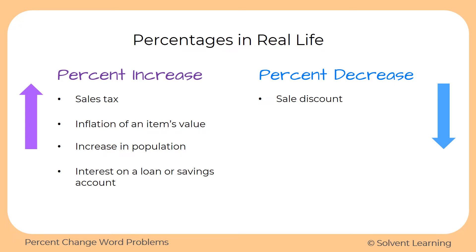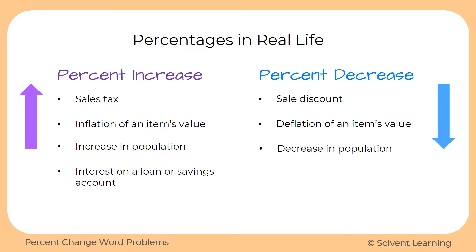We might see percent decrease if something we're buying is on sale and we're given a discount, which causes the price to go down. And just like items can inflate over time, we can also see deflation — for example, the more you drive a car, its value goes down. Just like population can increase, population can also decrease, and we can represent that as a percent decrease.